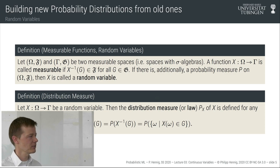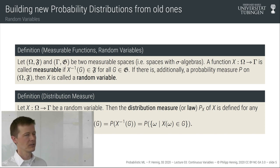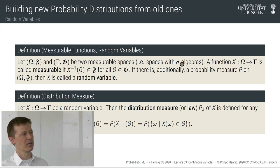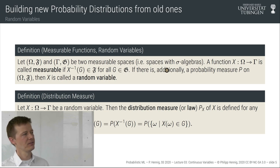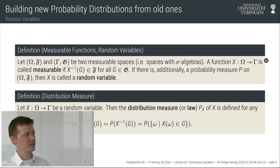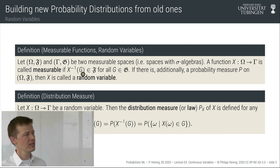First we need to define a measurable function. Consider two measurable spaces — each with an atomic set and a sigma algebra. In our example, one space is the space of all binary strings and the other is the natural numbers between zero and n. A function x between two such spaces is called measurable if, for any element g of the sigma algebra of the output space, the pre-image of g is in the sigma algebra of the input space.